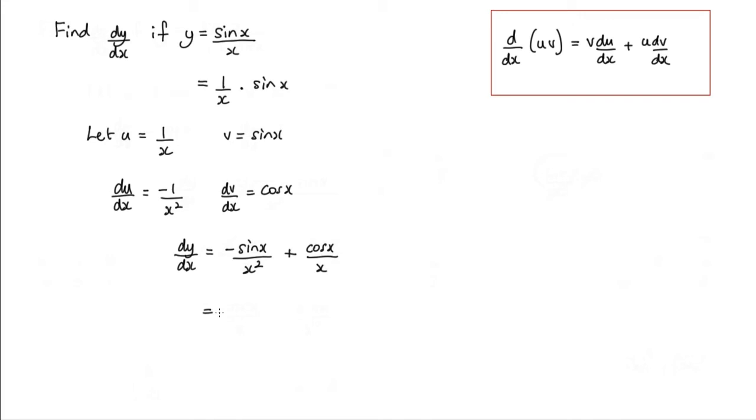Now we can actually rearrange this a little bit. We can write this as cos x over x minus sin x over x squared.